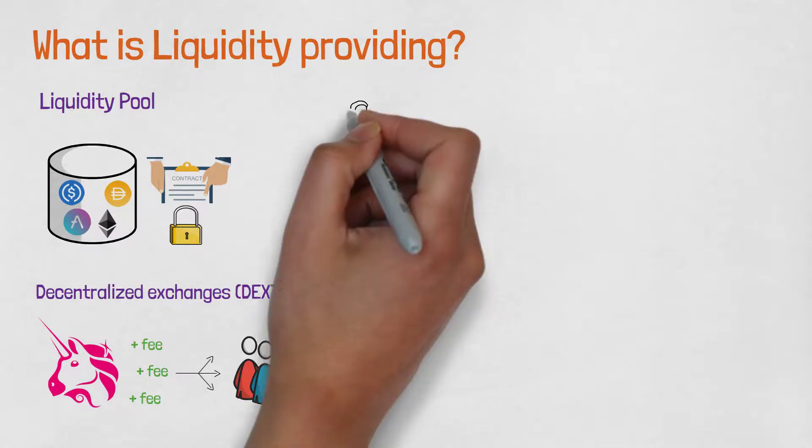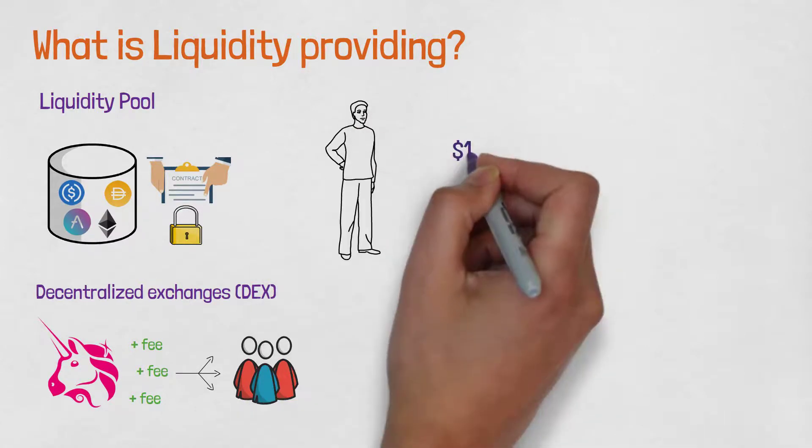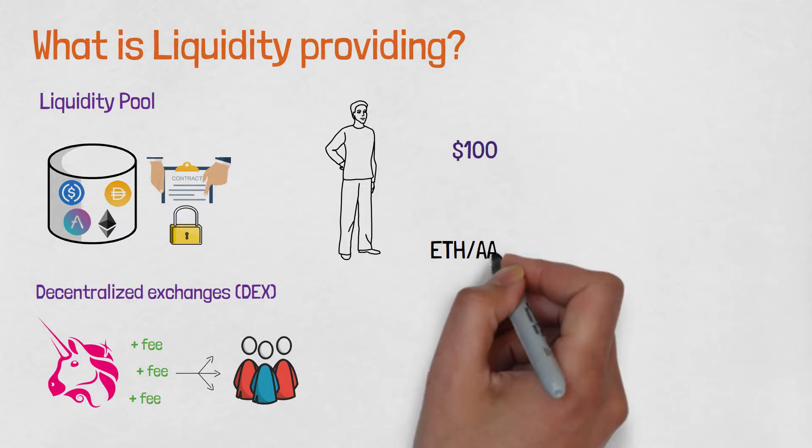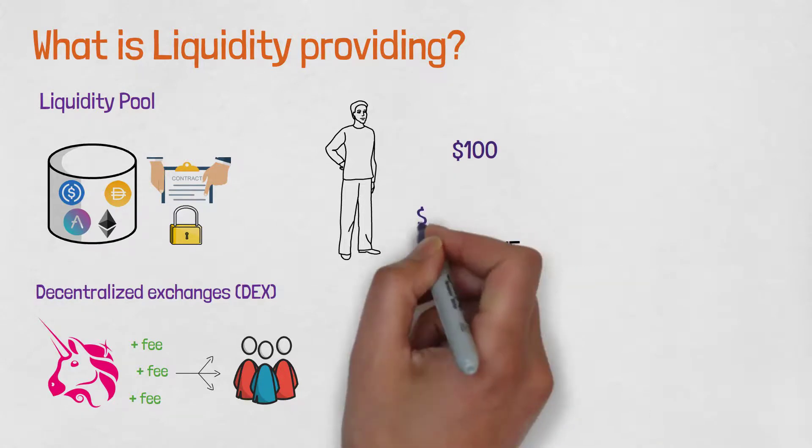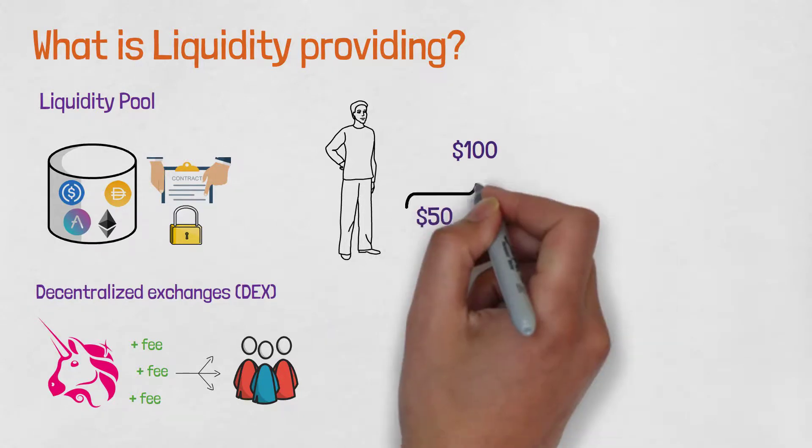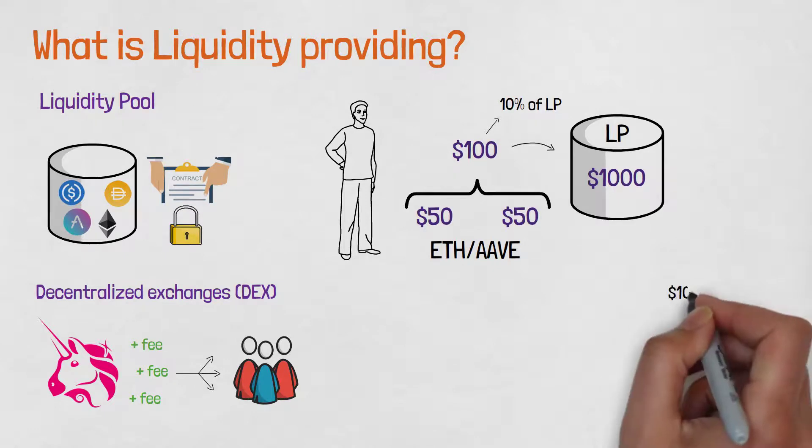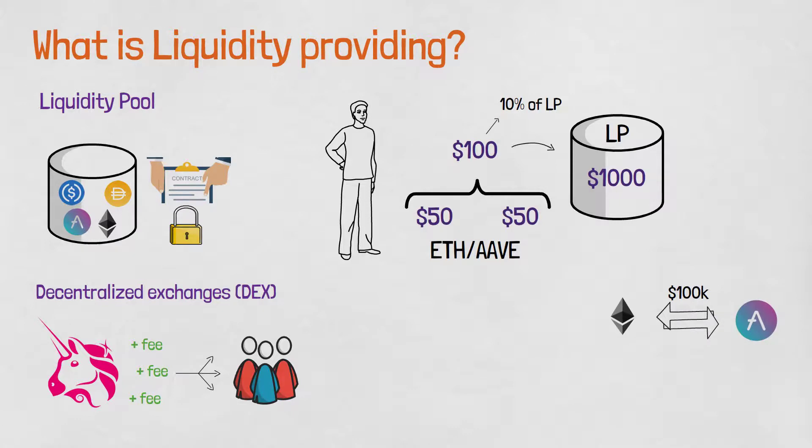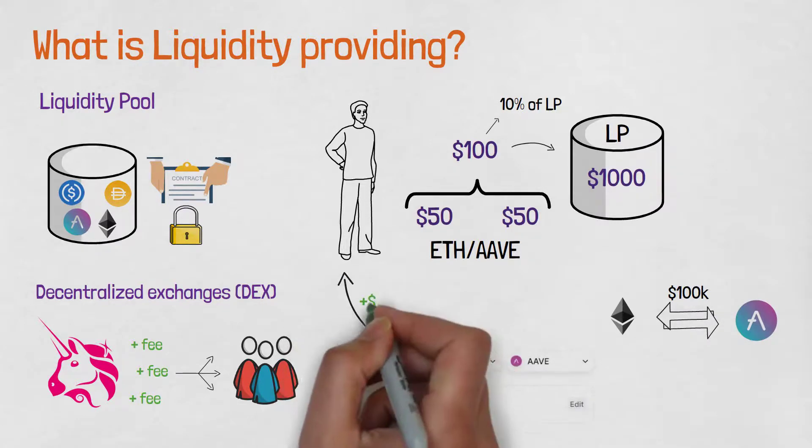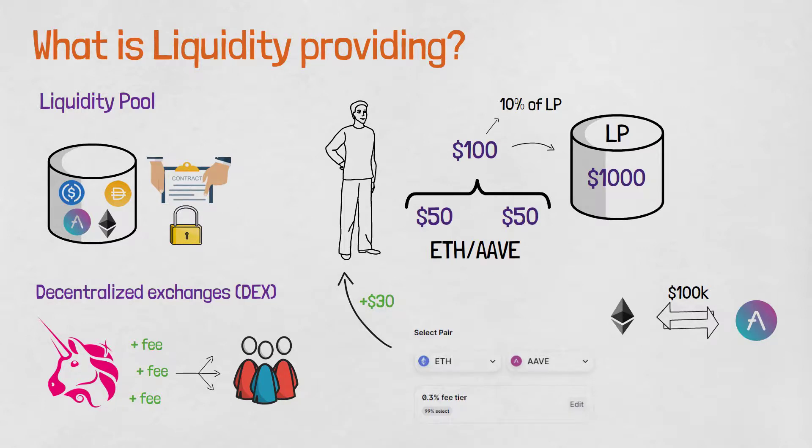Let's take a quick example. Let's say you have $100 and you want to provide liquidity with ETH and AAVE. So you will put $50 of each coin into liquidity pool. If the total amount in liquidity pool is $1000, that means you own 10% of that entire pool. In some period of time, $100k of ETH and AAVE gets traded on Uniswap. Uniswap fee for this pair is 0.3% so you will earn $30 for that amount of transactions on Uniswap protocol.